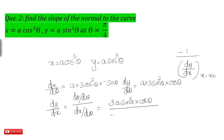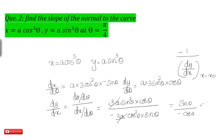Using parametric differentiation, dy by dx equals dy by d theta divided by dx by d theta. That is 3a sin square theta into cos theta divided by minus 3a cos square theta into sin theta. The 3a and 3a cancel, and simplifying gives dy by dx equal to minus tan theta.